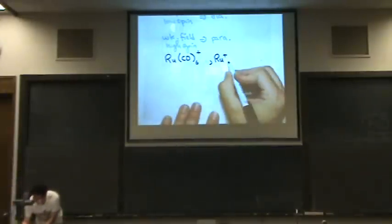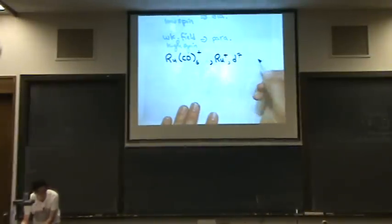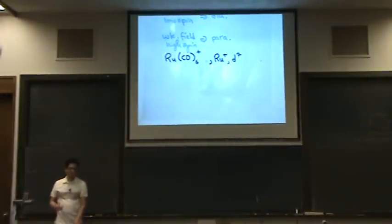Because there are seven electrons, I just want to remind myself of that, so it's d⁷. I'm going to now draw the CFT diagram and see if this is paramagnetic or diamagnetic or what the heck it is. So let's draw that out.